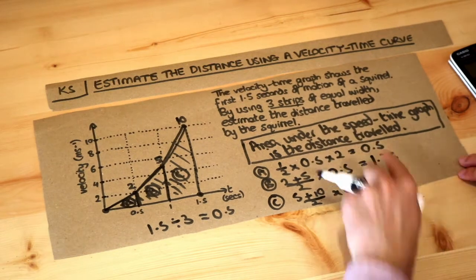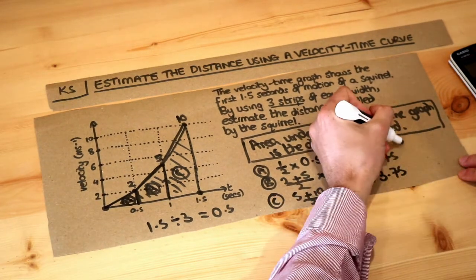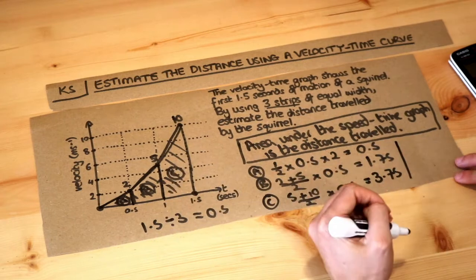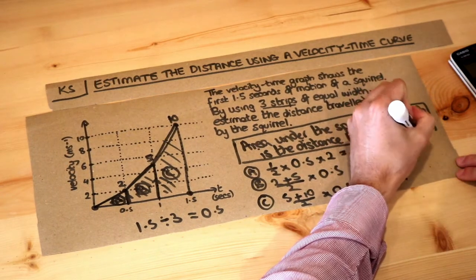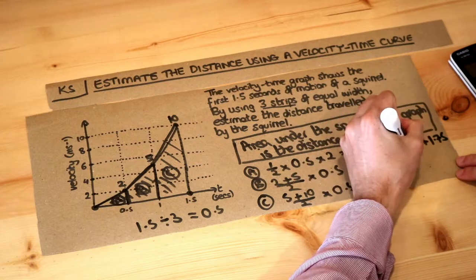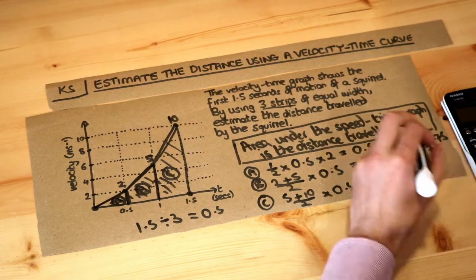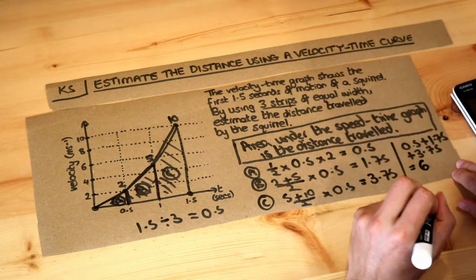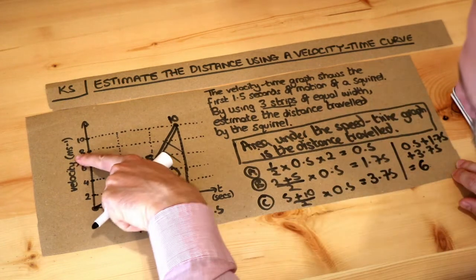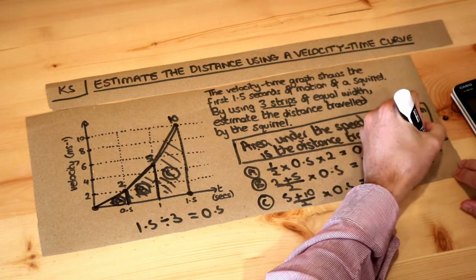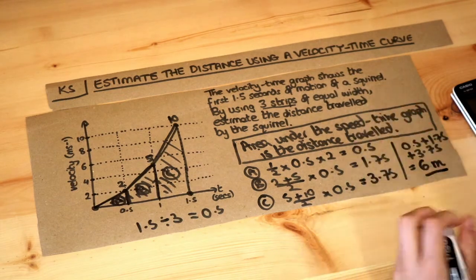And then we just add these areas together to get the total distance, because the area under the graph is the distance. So we just do 0.5 plus 1.75 plus 3.75. If I do that on my calculator, we get 6. And what's the unit? Well, this unit here is metres per second, so it's going to be in metres. And that's the final answer.